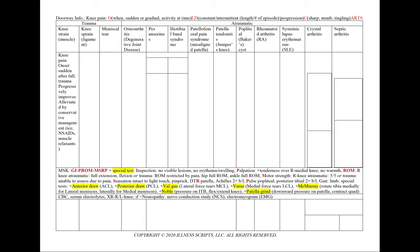In a knee strain or muscle strain, our supporting points include knee pain, an onset that's sudden after a fall or trauma, and progressively improving because it's involving the muscle, and alleviated by conservative management — ice, NSAIDs, or muscle relaxants.